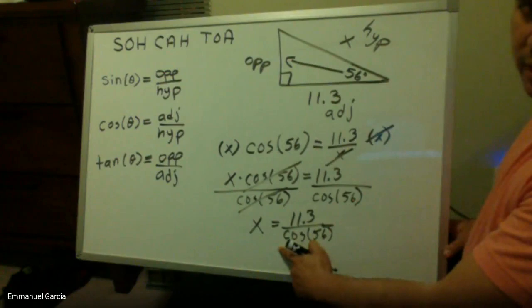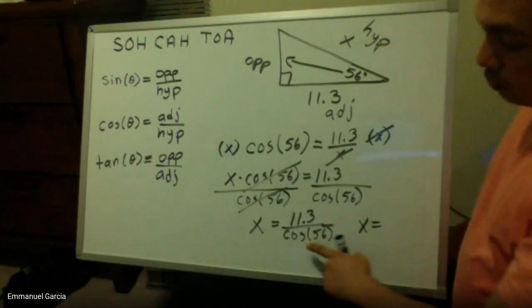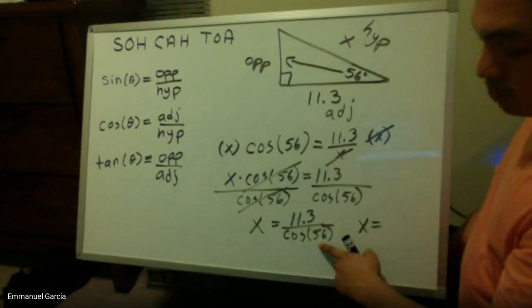So in order to find my x value, I just need to plug that into my calculator. And keep in mind, I'm not using my cosine inverse because I'm not looking for an angle. I'm looking for a side. So I just need to type it as it is there.